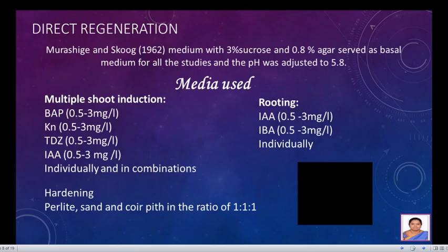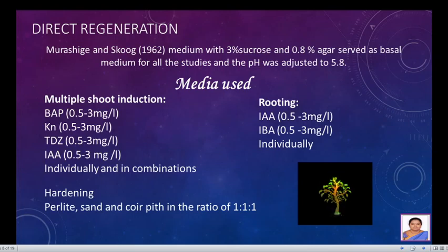We shall see an example of a direct regeneration pathway: multiple shoot induction from nodal explants of a medicinal plant belonging to Acanthaceae. We used Murashige and Skoog medium with 3% sucrose, 0.8% agar, and the pH was adjusted to 5.8. We used BAP, kinetin, TDZ, and IAA in the given range both individually and in combinations. The multiple shoots obtained were taken for rooting on either IAA or IBA, and for hardening we used perlite, sand, and coir pith in the ratio of 1:1:1.